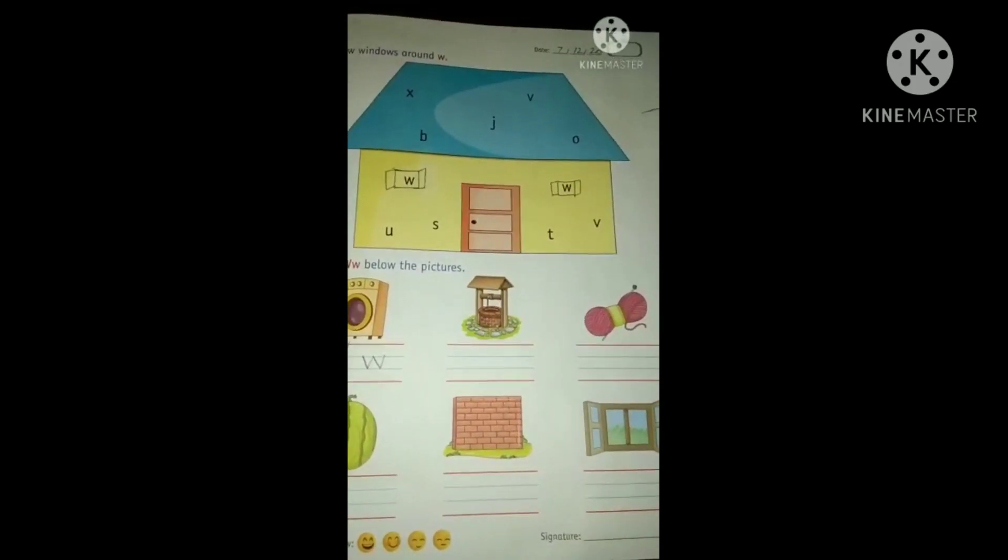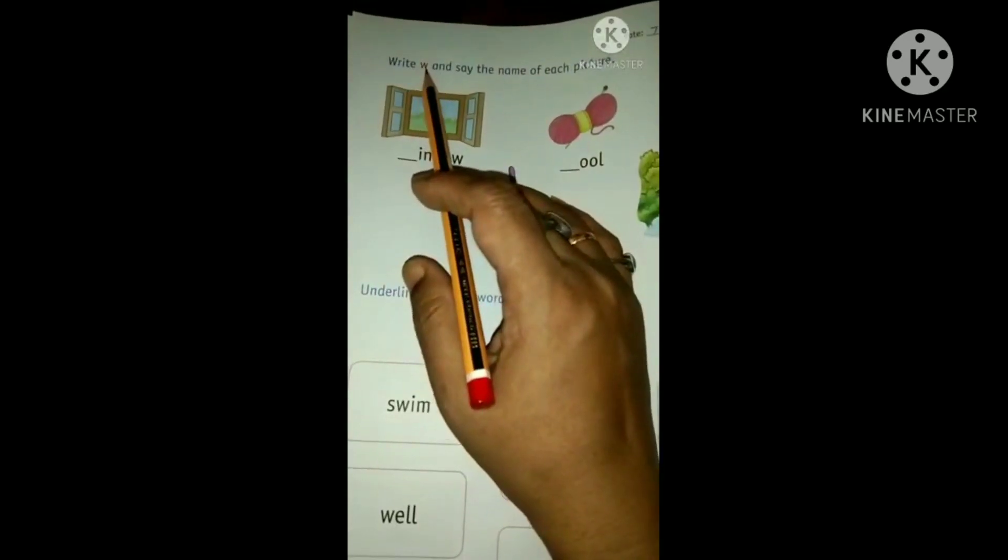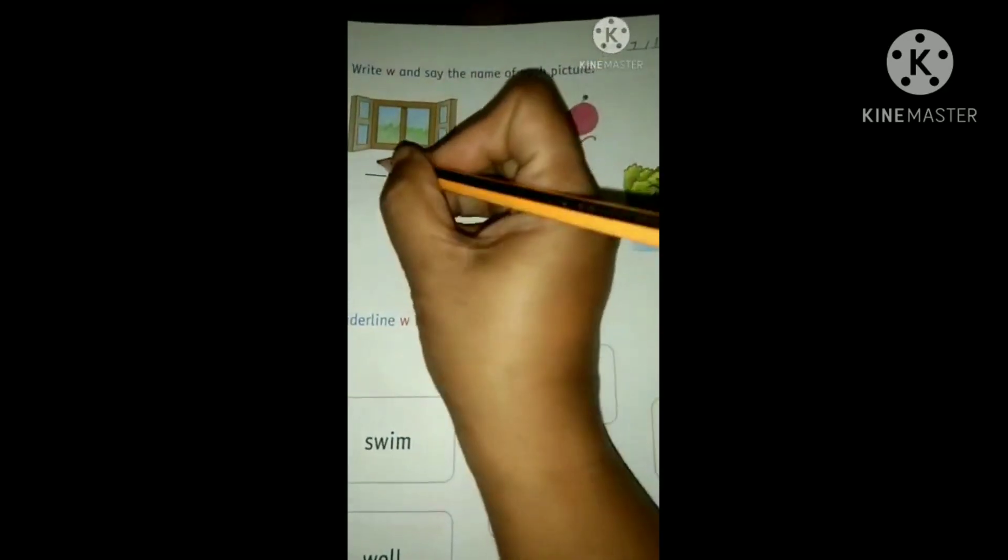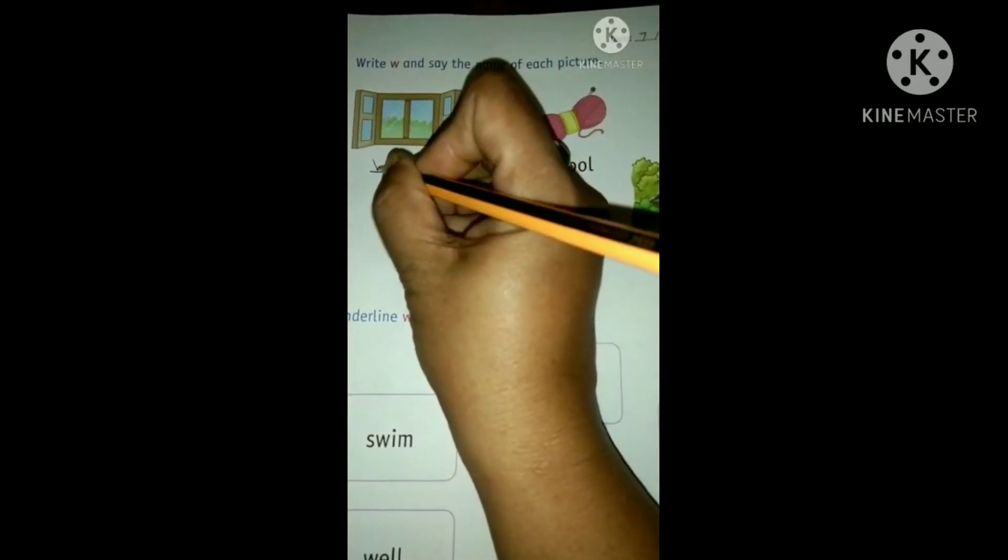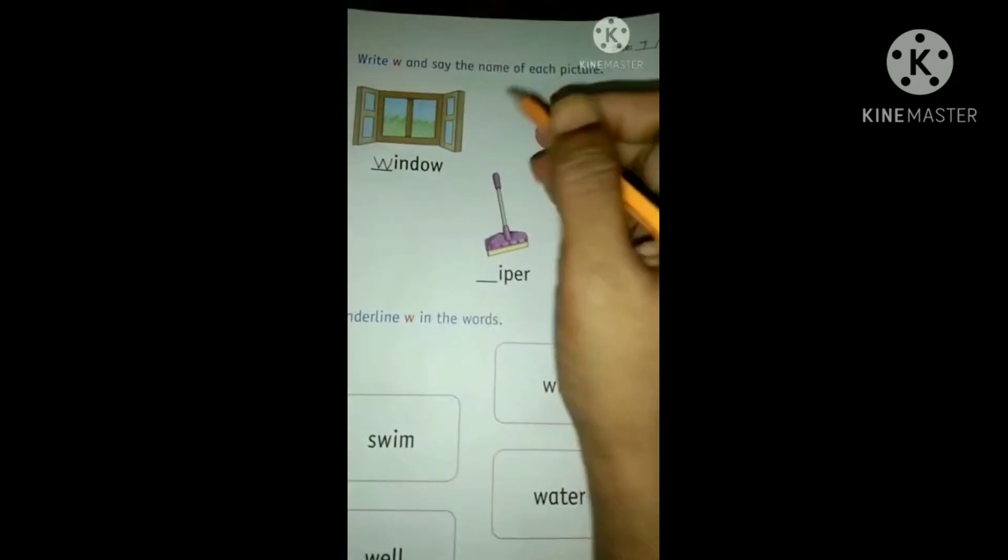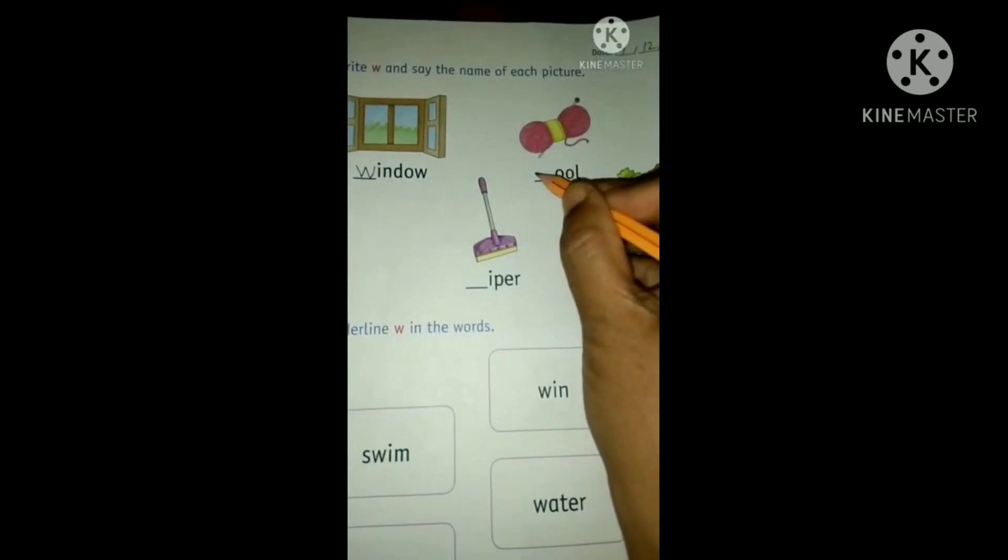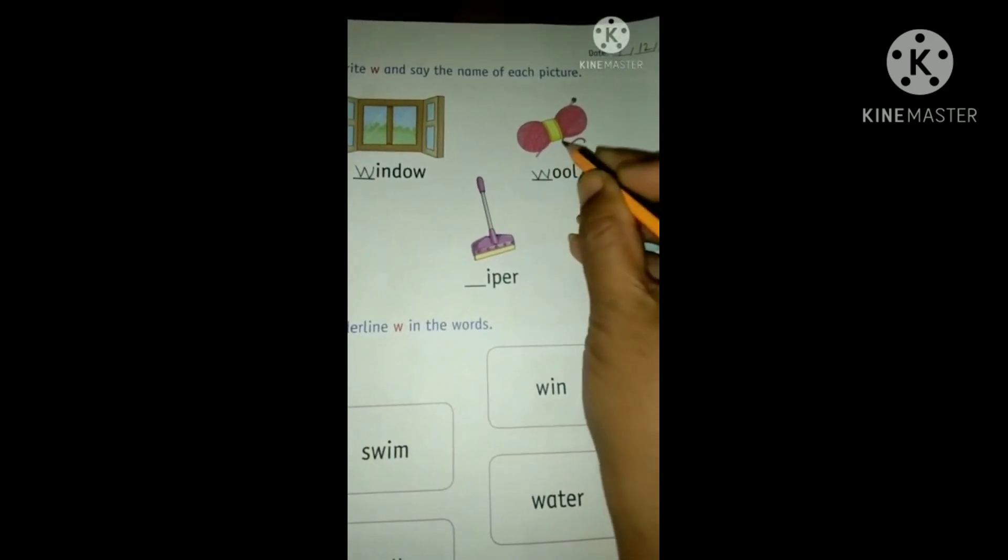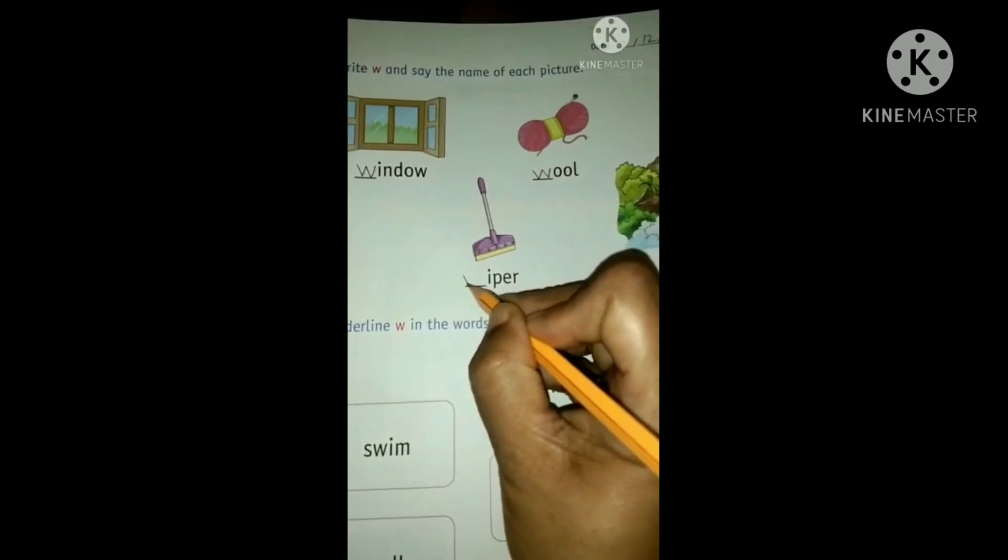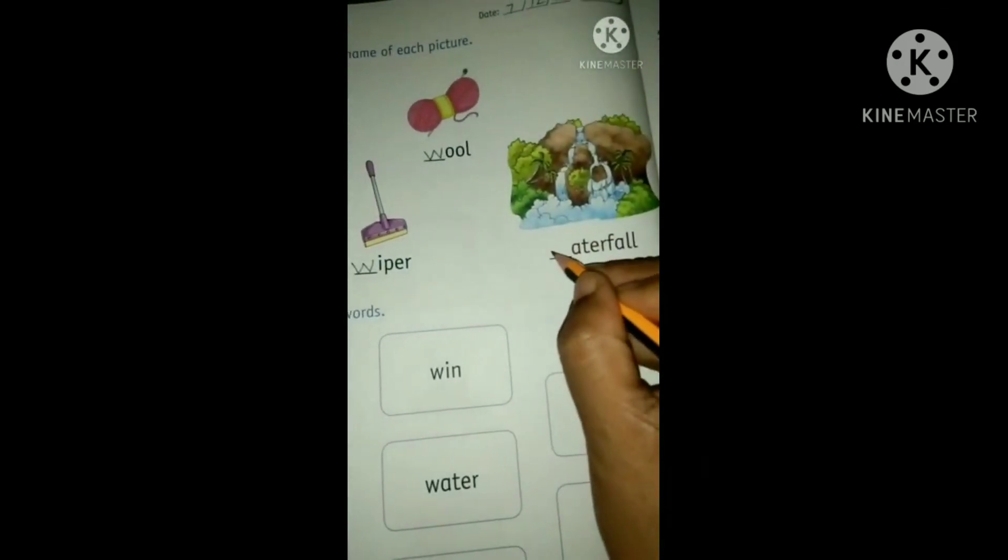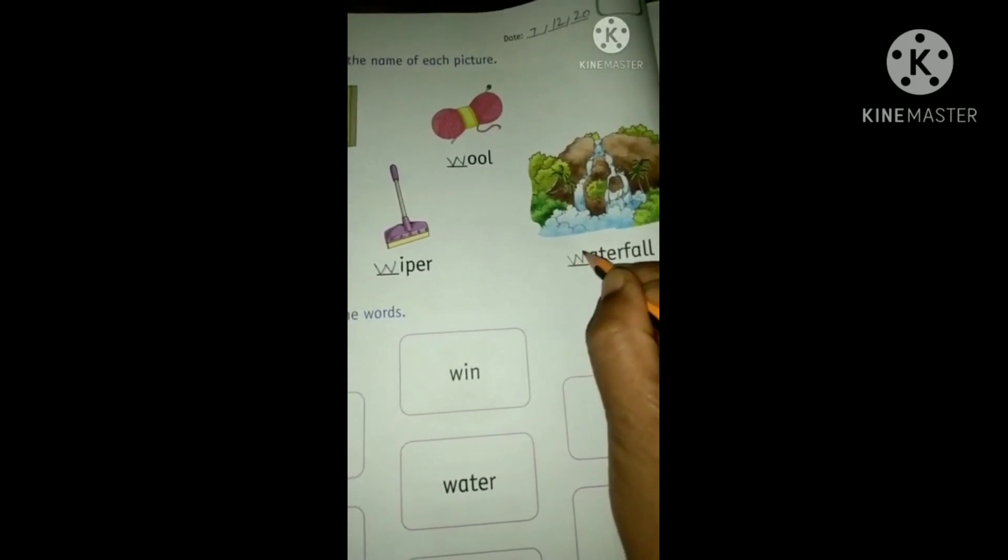Turn the page. Now see, write W and say the name of each picture. So, while we will write small letter W, we will speak. W for window, W for wool, W for wiper, W for waterfall.